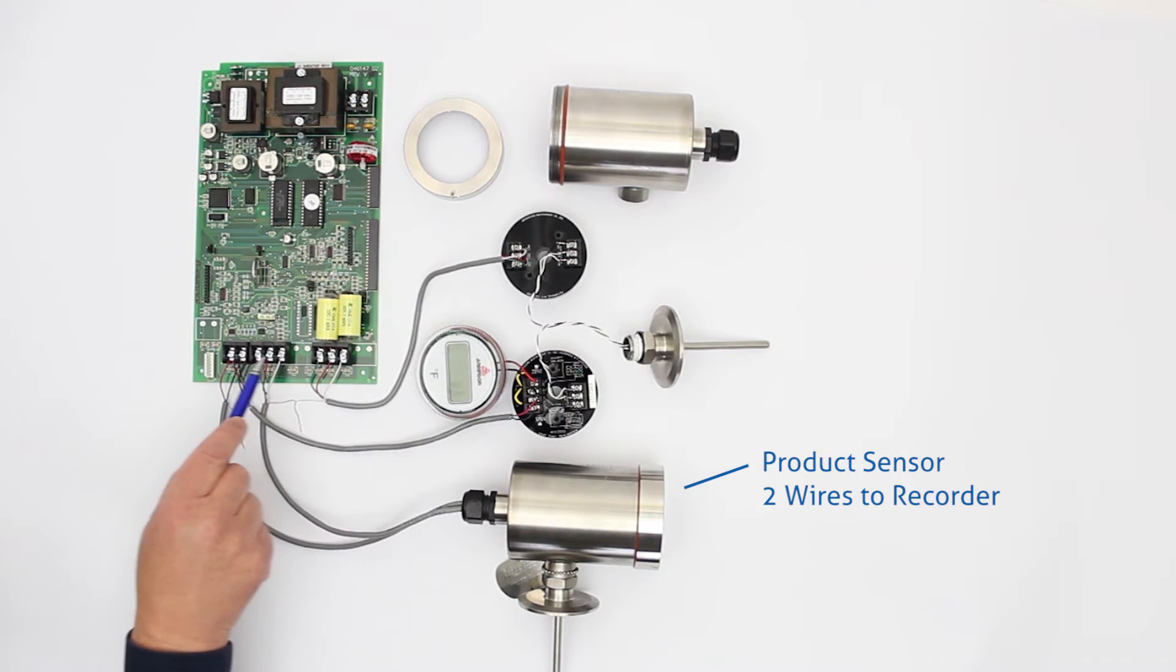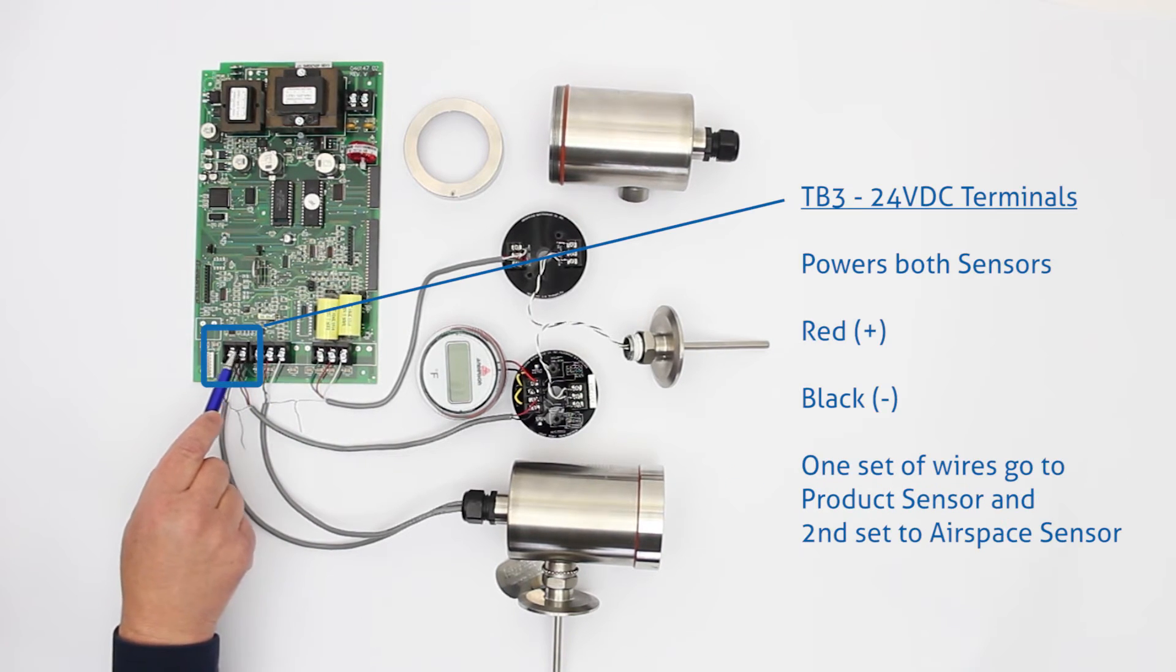So we look at the motherboard of the recorder, we have the TB3 and this supplies power to both sensors. That's why we have two red wires on the plus and two black wires on the minus. One set of wires goes to the product sensor, the other set of wires goes to the airspace sensor.